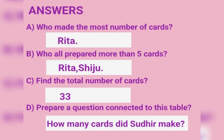Answers: A. Who made the most number of cards? Tricha. B. Who all prepared more than 5 cards? Shiju and Tricha. C. Find the total number of cards: 33. D. Prepare a question connected to this table — example: How many cards did Sudhir make?